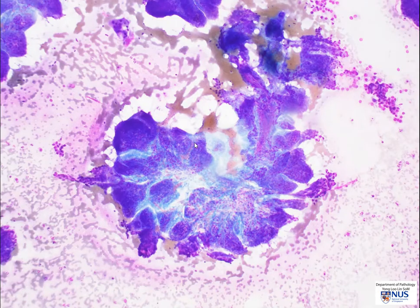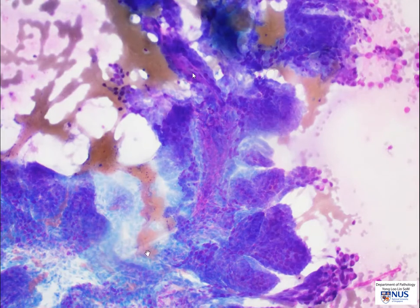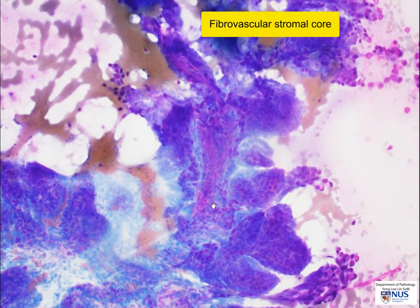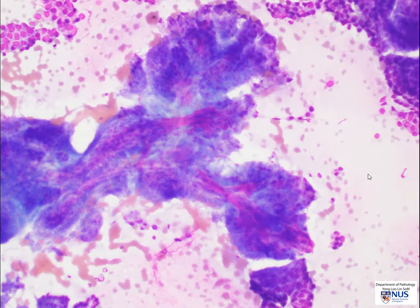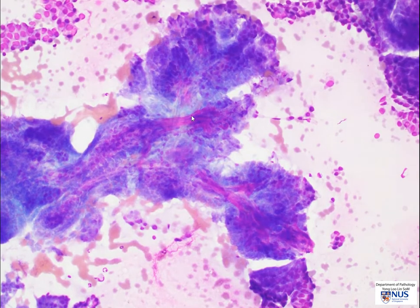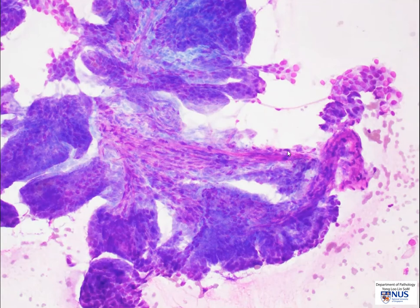Here is another example of PTC looking at the air-dried smear. This field shows a very well-formed papillary structure, and we can even see the architecture of the epithelial cells. Here again, we can appreciate the fibrovascular finger-like core, which is covered by epithelium. Here is another area where we can see the very slender fibrovascular cores, and yet another area where the cores are very well demonstrated.